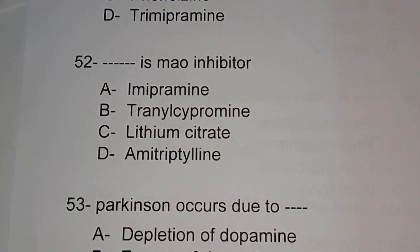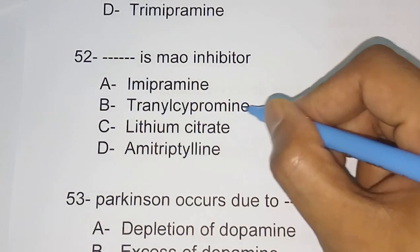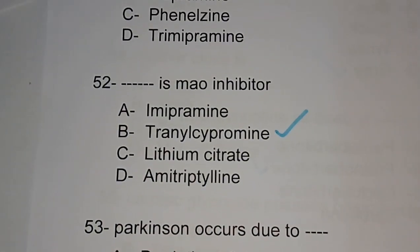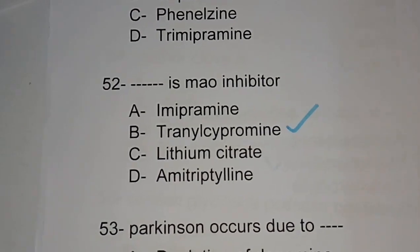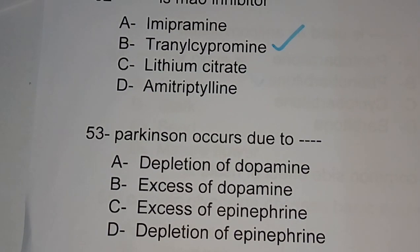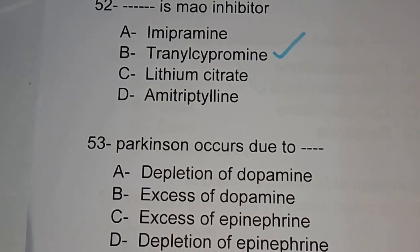Question number 52: which is a monoamine oxidase (MAO) inhibitor? Options are imipramine, tranylcypromine, lithium citrate, amitriptyline. The correct answer is option B, tranylcypromine. Imipramine and amitriptyline are TCAs; lithium is used for mania; and tranylcypromine is an MAO inhibitor.